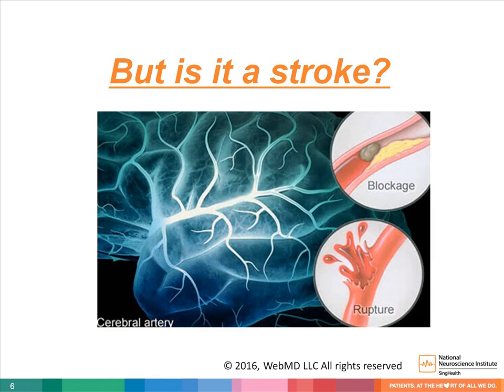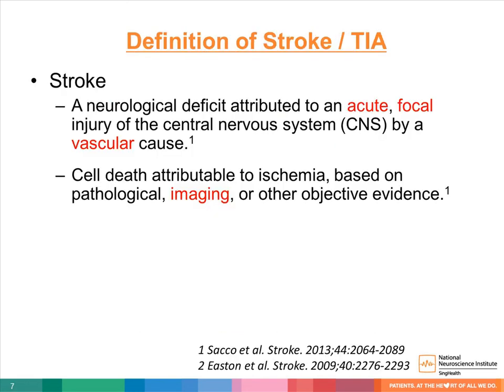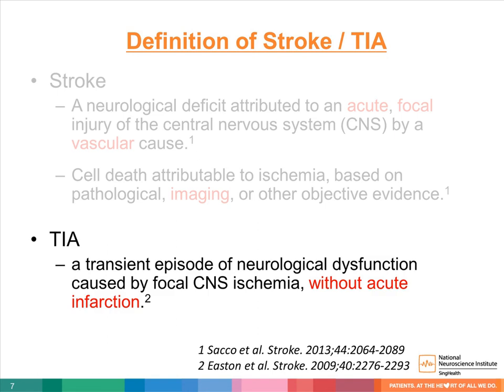Nevertheless, even with a comprehensive history and clinical examination, how sure are we that the patient in front of us is indeed suffering from a stroke? Stroke is defined as a neurological deficit that causes an acute focal injury of the central nervous system by a vascular cause, with cell death due to ischemia based on pathological imaging or other objective evidence. Transient ischemic attack is defined as a transient episode of neurological dysfunction caused by focal central nervous system ischemia without acute infarction or cell death.